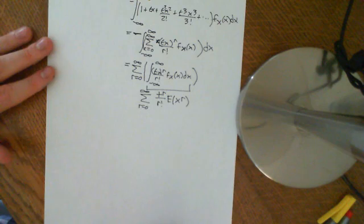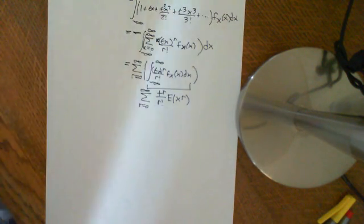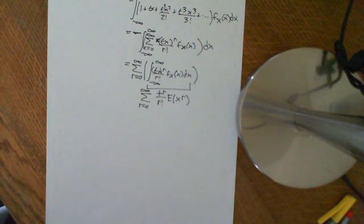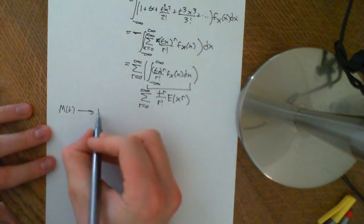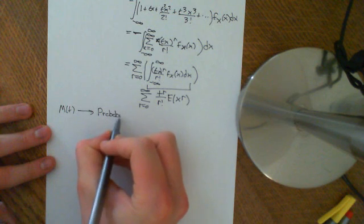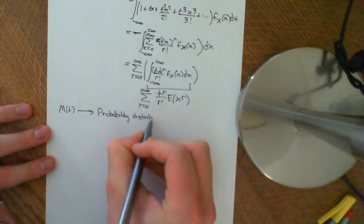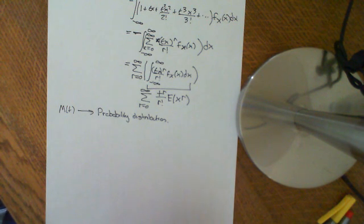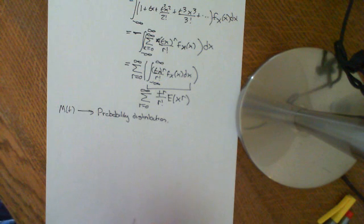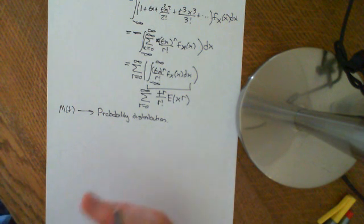There's another theorem about moment generating functions that is incredibly difficult to prove — comparable to proving a Fourier transform — which is that a moment generating function M(T) uniquely specifies a probability distribution. Each probability distribution has a moment generating function, and that moment generating function is unique: if a probability space has a certain MGF, there is only a single probability distribution with that MGF. So the MGF is another representation of the probability distribution, on par with the CDF and PDF.